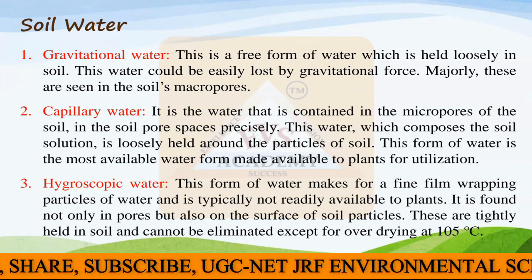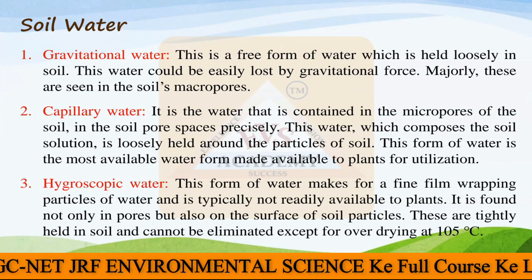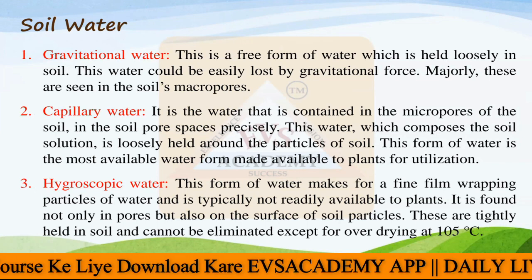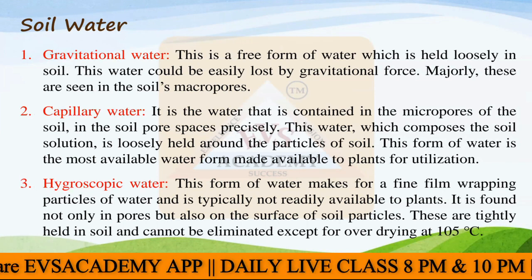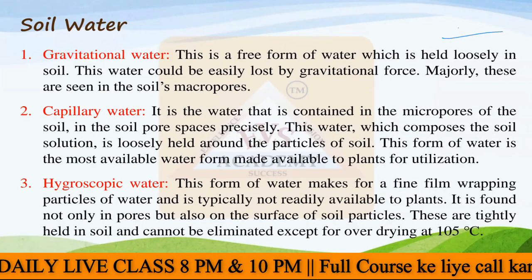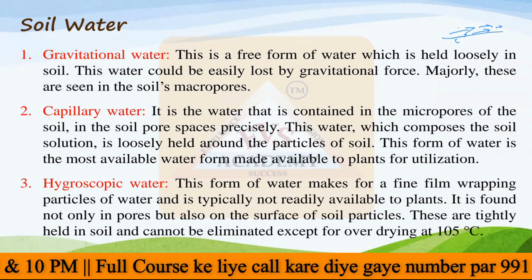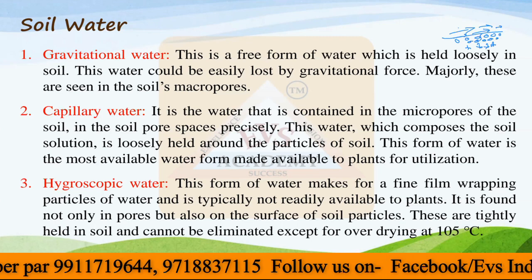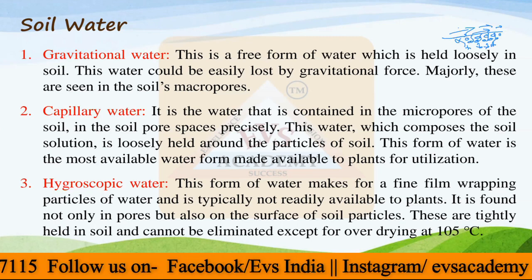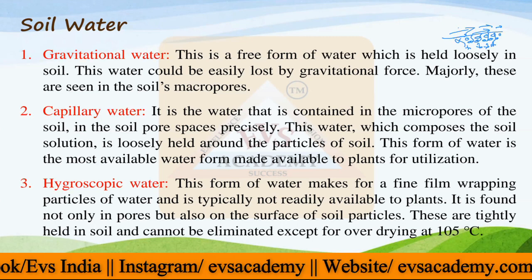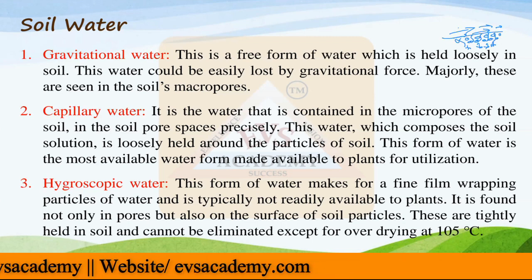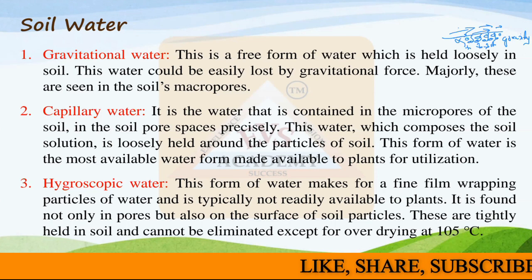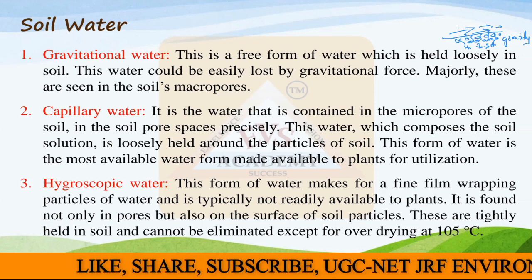The very first type is gravitational soil water. This is free water which is held loosely in the soil and can easily be lost by gravitational force. When a good amount of moisture is present in the soil, water flowing at the surface will come down and leach through the spaces between different soil layers and soil particles — automatically going down without any requirement of external force. The force working here is gravity itself. That type of water is called gravitational water.